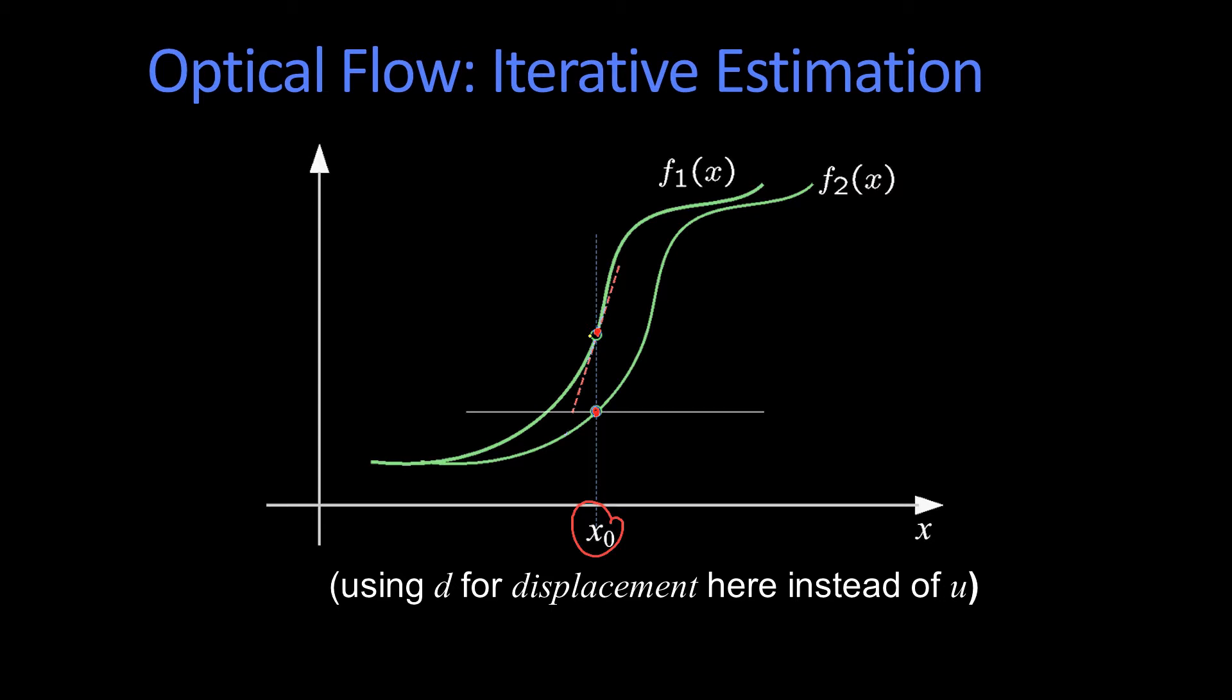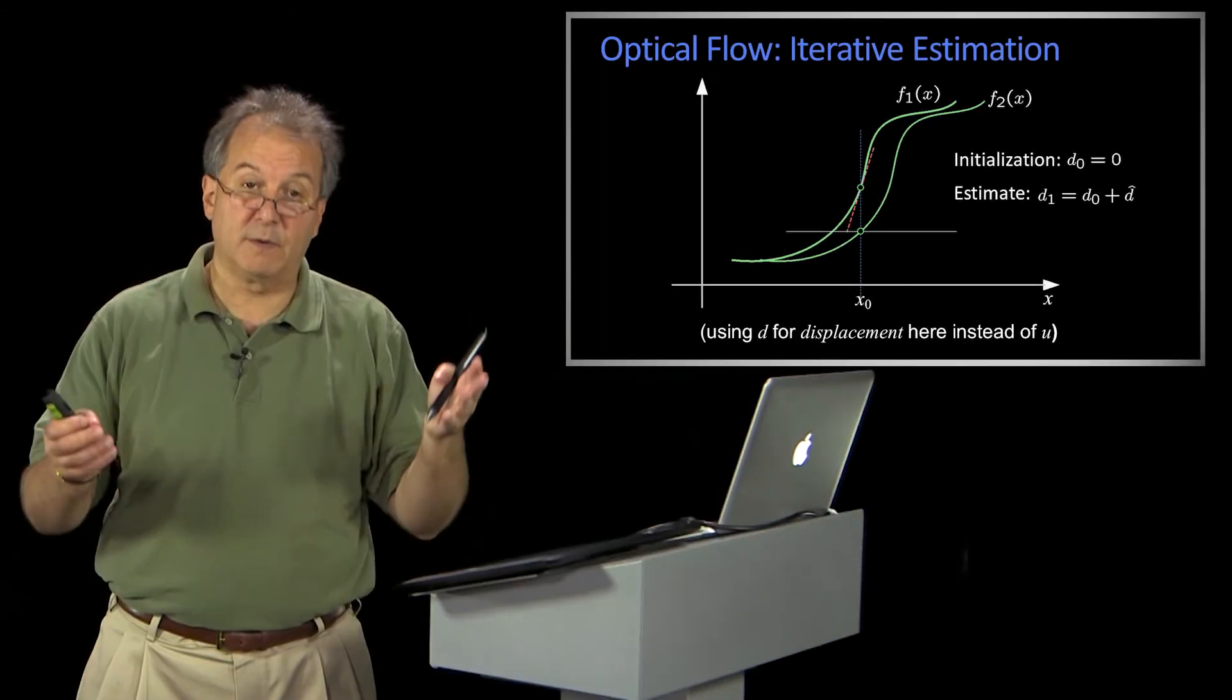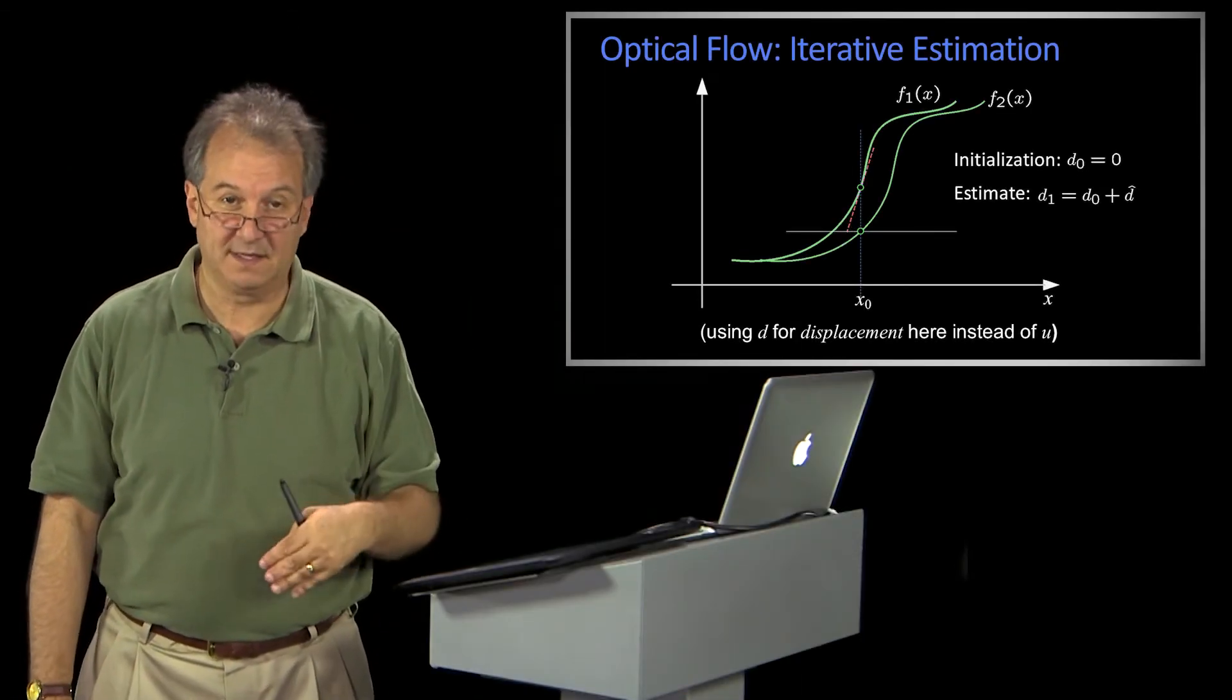So what I have to do is, I want to find this displacement at x0. Here's how we do it. We initialize - since this is iterative, we have to initialize. We'll first start by assuming that our displacement was zero. That is, u and v are all zeros everywhere. That makes the warp really fast. I don't do anything, it's the original picture.